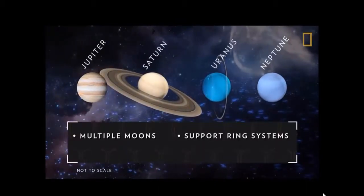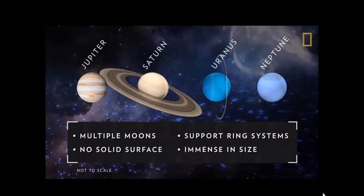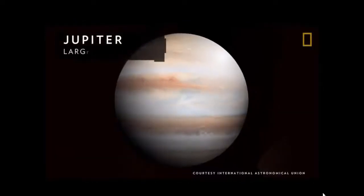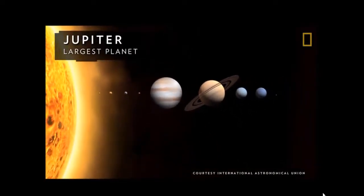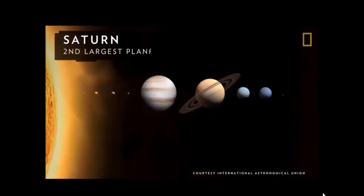All four jovian planets have multiple moons, ring systems, no solid surface, and are immense in size. The largest is Jupiter, the largest planet in our solar system, and Saturn is the second largest planet.